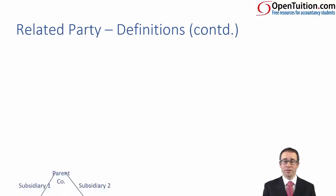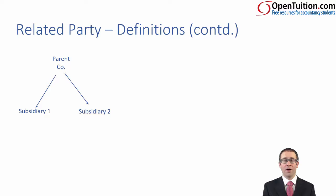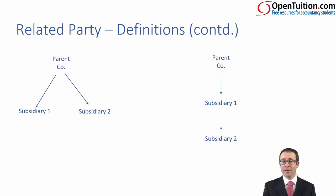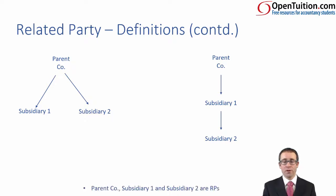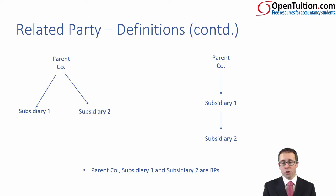Carrying on with the definitions, you could have a parent and two subsidiaries both controlled by the parent — again, there's an unbroken chain of control. You could also have a complex group with a parent, a subsidiary and a sub-subsidiary. Again, there is an unbroken chain of control. They are all members of the same group, so therefore the parent, subsidiary one and subsidiary two are all related parties.